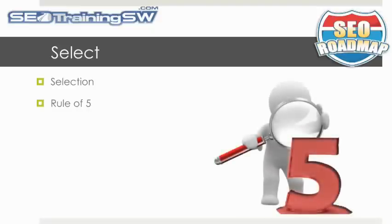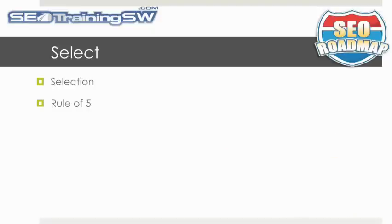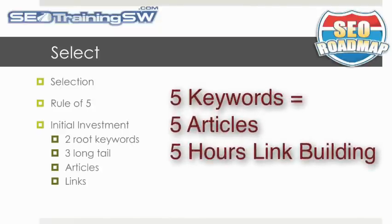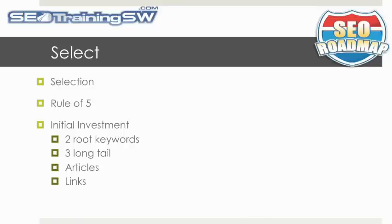Therefore, make it easy on yourself and remember my rule of five: five keywords equals five articles plus five hours a week. I understand that some keywords will be harder to optimize than others. That is why I also recommend that you include a couple of root keywords for your long-term investment along with a few long-tail keywords that you can quickly optimize for and that will hopefully start paying you in the short term.